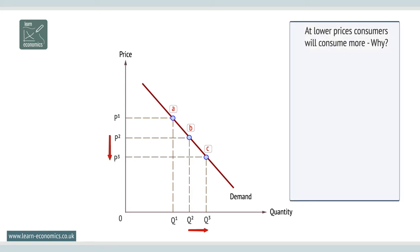Marginal utility, or benefit, falls as more is consumed, and lower price will encourage demand. Marginal is an important concept in economics and means the additional amount of something resulting from an economic action. In this case, marginal utility is the additional benefit gained from consuming one more unit of a good or service.